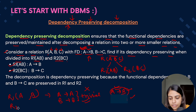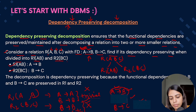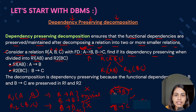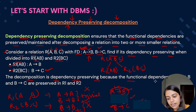Coming to the second table R2, which has attributes B and C. The trivial dependencies B→B and C→C we can ignore. The non-trivial one is B→C. B→C is present before the decomposition and also after, so it is preserved. Both functional dependencies are preserved — A→B in R1 and B→C in R2 — so the decomposition is dependency preserving.